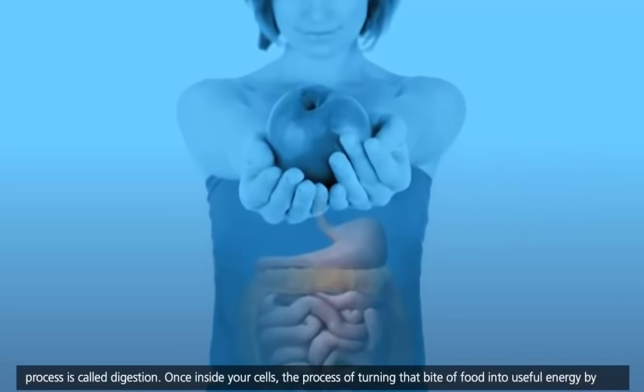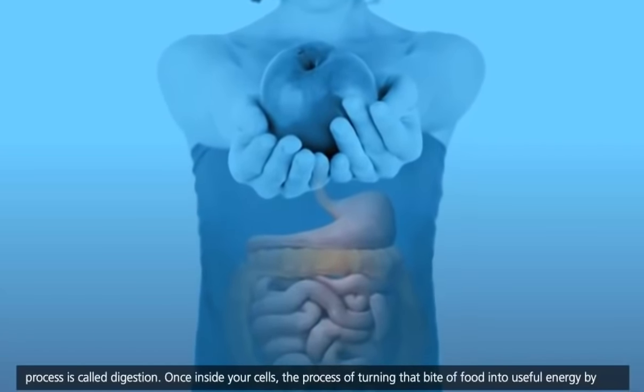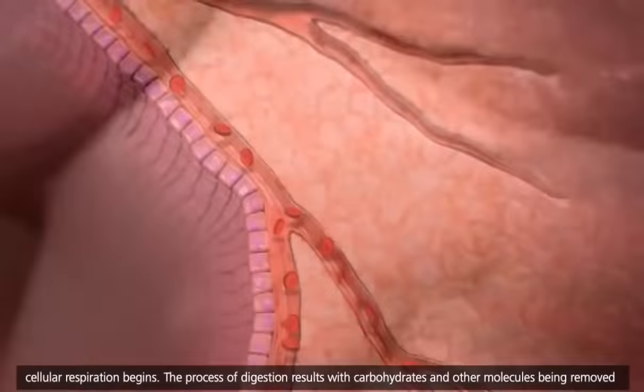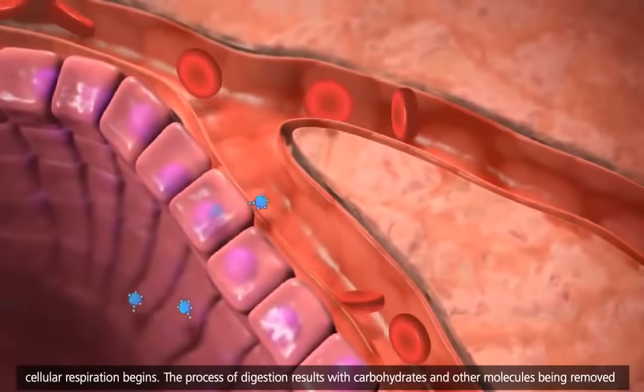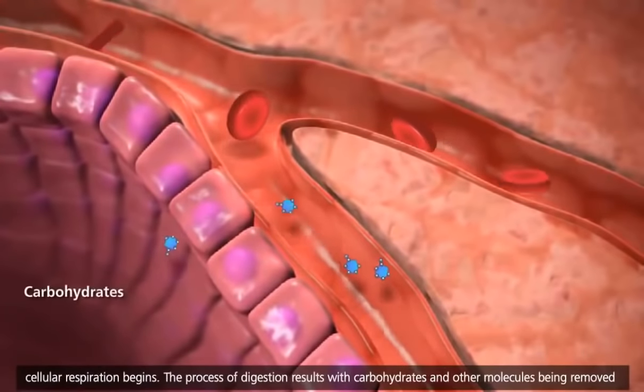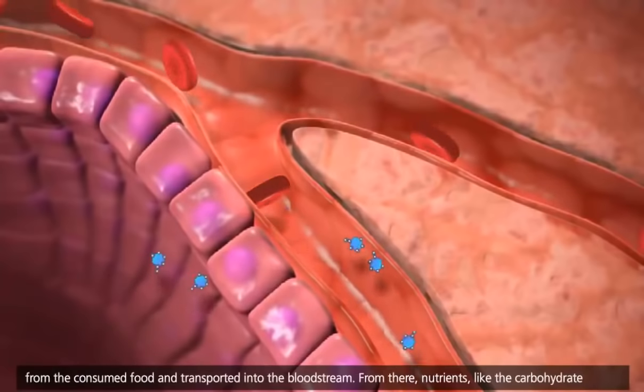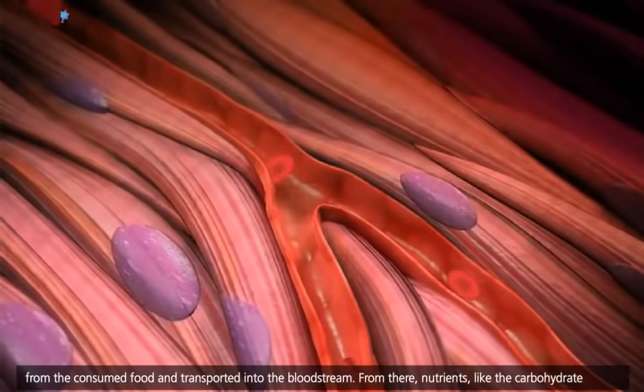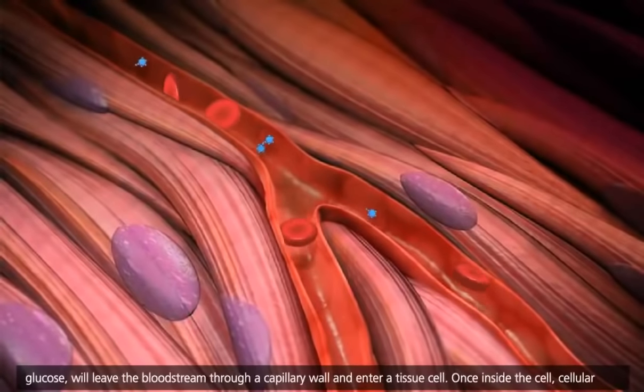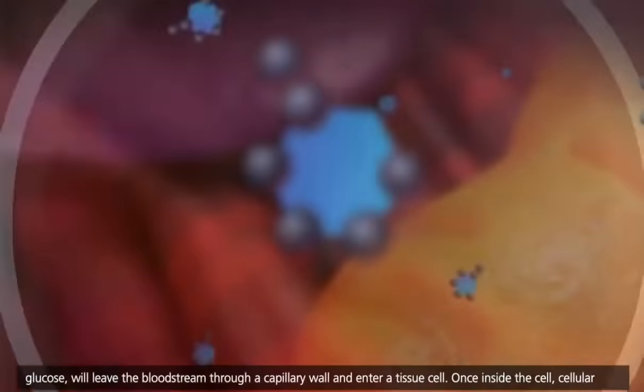Once inside your cells, the process of turning that bite of food into useful energy by cellular respiration begins. The process of digestion results with carbohydrates and other molecules being removed from the consumed food and transported into the bloodstream. From there, nutrients like the carbohydrate glucose will leave the bloodstream through a capillary wall and enter a tissue cell.